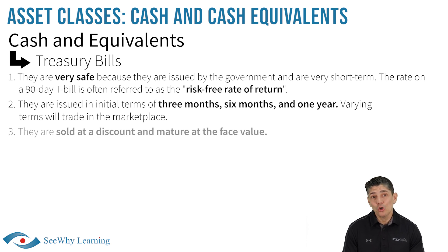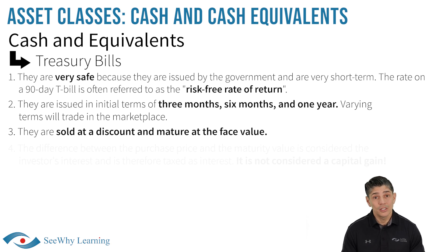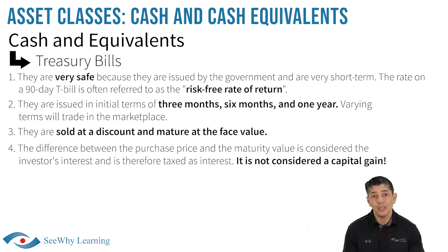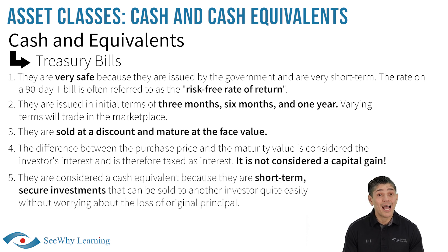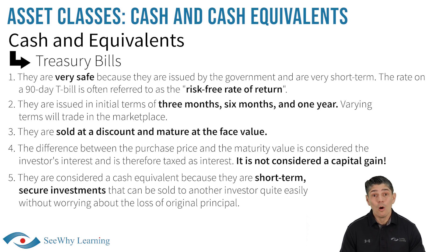T-bills are sold at a discount and mature at the face value. The difference between the purchase price and the maturity value is considered the investor's interest and is therefore taxed as interest — it is not considered a capital gain. They are considered a cash equivalent because they are short-term, secure investments that can be sold to another investor quite easily without worrying much about the loss of original principal.